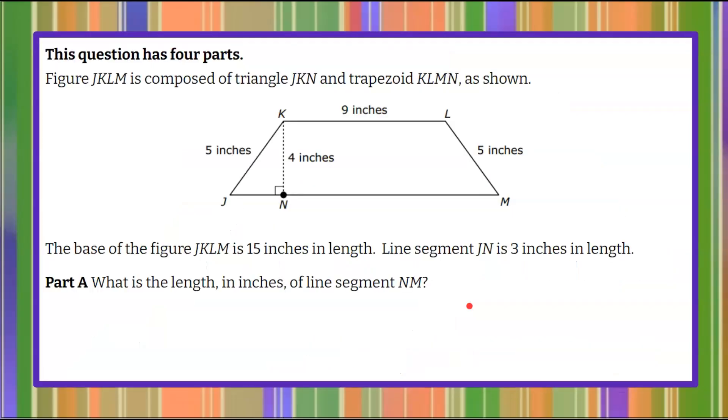We have a four-part question today where we're given figure JKLM composed of triangle JKN and trapezoid KLMN. We're told that the base of the figure JKLM, the entire trapezoid, is 15 inches and that line segment JN is three inches in length.